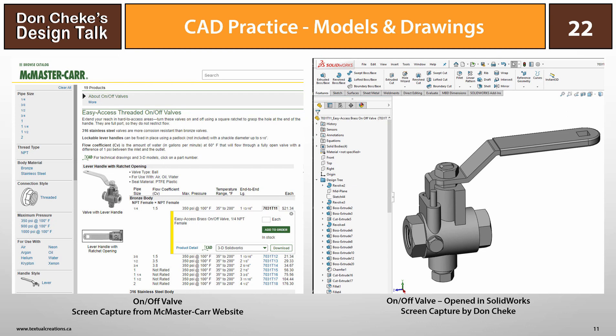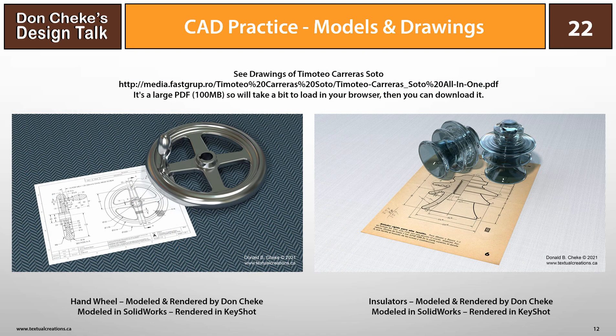You can often download models in their native format — like many from McMaster-Carr — and then perform a model review via the part reviewer palette in SolidWorks or by working through the design tree. Check out a number of my other design talks, like Notchbox, where model build reviews are an integral part of the presentation. The build review is an excellent way to see how I went about modeling and learn from that.